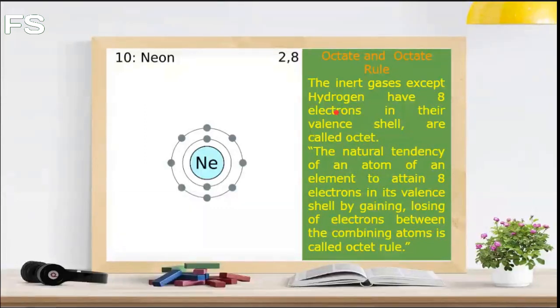Thus, the natural tendency of an atom to make eight electrons in its valence shell by gaining, losing, or sharing electrons between combining atoms during molecule formation is called the octet rule.